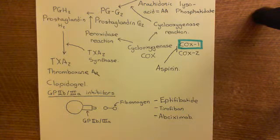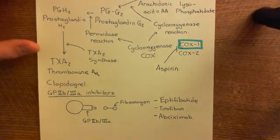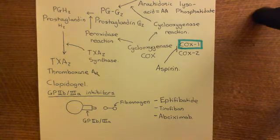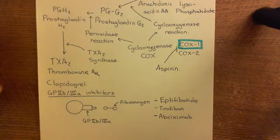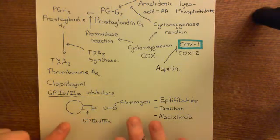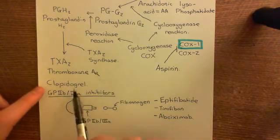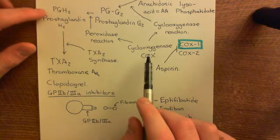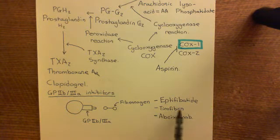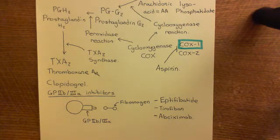So eptifibatide, tirofiban, and abciximab are all the GP2B/3A inhibitors. Those are the drugs that target the platelet mechanisms — clopidogrel, aspirin, and these GP2B/3A inhibitors all attack the platelets. Clopidogrel stops platelet activation, aspirin stops the release of thromboxane A2, and eptifibatide, tirofiban, and abciximab stop the actual aggregation. Now we're going to move on to anticoagulants — drugs which have antithrombotic effects through stopping the coagulation cascades.